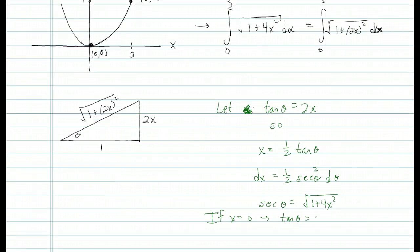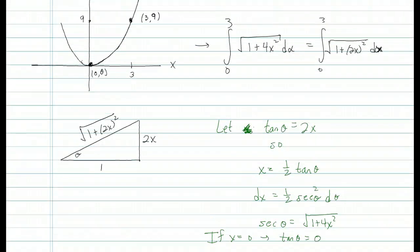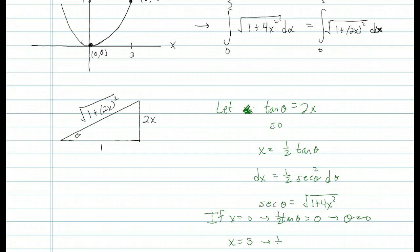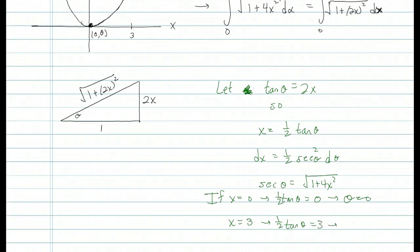Since we have a definite integral, we're going to change the limits. If x equals 0, then one-half tangent theta equals 0, so tangent theta equals 0, giving us theta equals 0. If x equals 3, then one-half tangent theta equals 3, so tangent theta equals 6. To solve for theta we take the inverse tangent of each side, so theta equals the inverse tangent of 6.